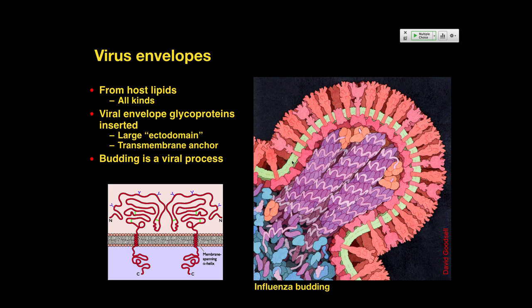Virus envelopes have virus envelope proteins, almost always glycoproteins — they have sugars attached to them. These glycosylation points are put on the protein on the outside probably for a couple of different reasons: one is to protect those virions from cellular defense mechanisms, and also probably to help with solubility so they don't aggregate with each other. When we talked about hemagglutination, it turns out it's these glycosylation points that really help to bind red blood cells together.